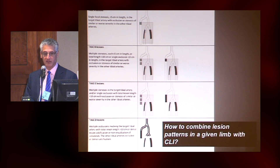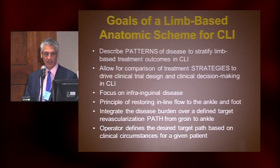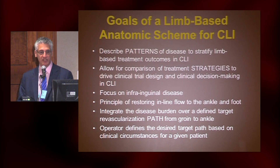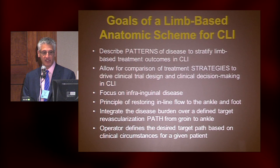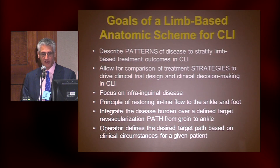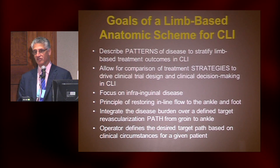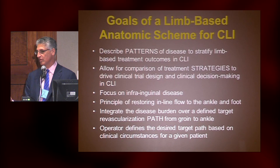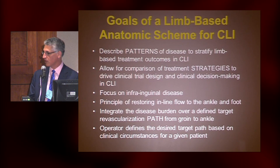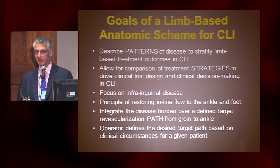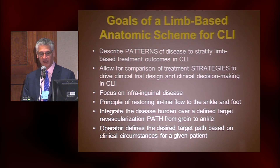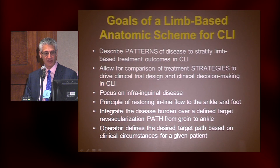So how do you combine this to actually help you decide what to do for a patient with CLI? Many of us believe we need a new scheme — one that really describes not so much individual lesions but patterns of disease, so that we can stratify and compare outcomes for different approaches and treatment strategies, and also to drive clinical trial designs, much more like we understand with coronary disease. Everybody knows single, two, three-vessel disease plus or minus bad heart function. Nobody knows what we're talking about when we're talking about these patterns of peripheral disease. It's not easy to understand, design trials, or compare outcomes.